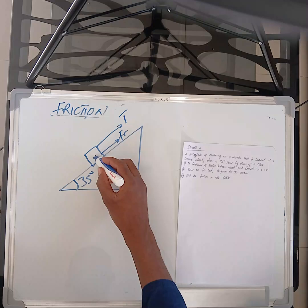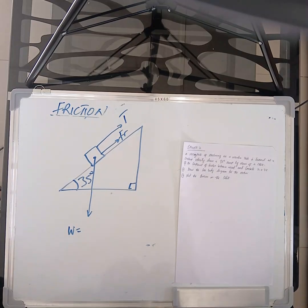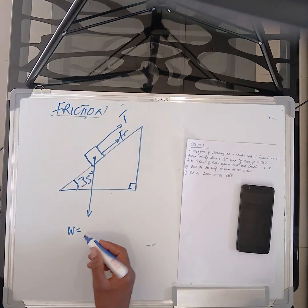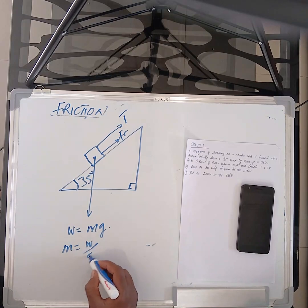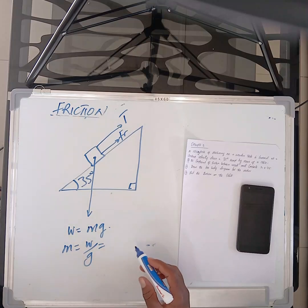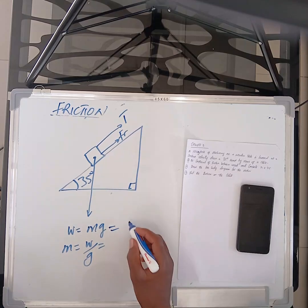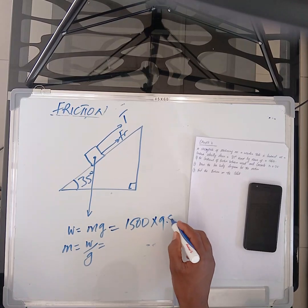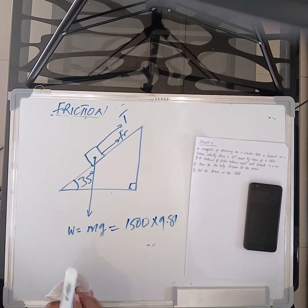The weight. We are told that this guy is 1500 newton. So weight is equal to mass times gravity. Mass is equal to weight over gravity. So I'm looking for weight. I'm looking for mass. I've already been given the mass that it's 1500. So 1500 times 9.81.